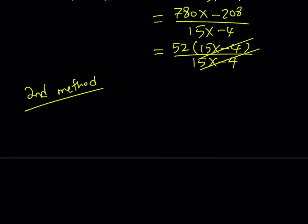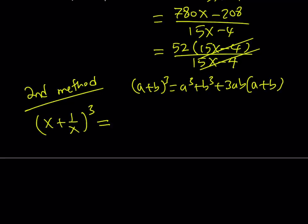My second method is a little different. So I'm going to start by cubing x plus 1 over x. So can I use an identity? Remember, I told you earlier that this can be written as a cubed plus b cubed plus 3ab multiply by a plus. And I told you that this is a very helpful identity. It's going to be very helpful here. So I can write it like this: x cubed plus 1 over x cubed plus 3 times x times 1 over x times x plus 1 over x.